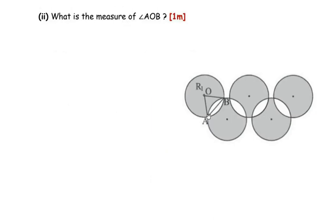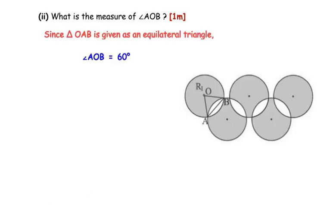What is the measure of angle AOB? In the question it was given that triangle OAB is an equilateral triangle, and all the angles of an equilateral triangle are 60 degrees. So angle A, angle B, and angle O each become 60 degrees. Therefore, the measure of angle AOB is 60 degrees.